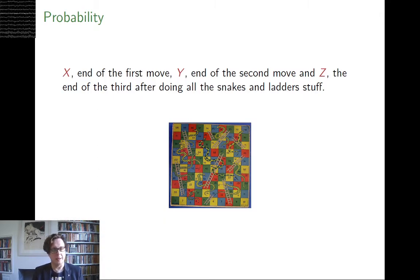So let's think a little bit about the probabilities. We'll use X as the random variable of the result of where you are at the end of the first move. So this is going to have a value somewhere between 3 and 13 because the lowest roll you can have is two 1s giving you a 3, the highest roll you can have is a 12.